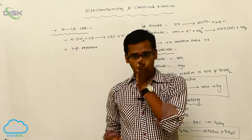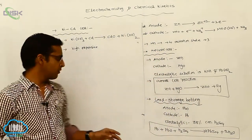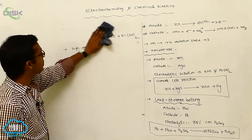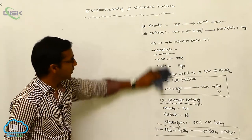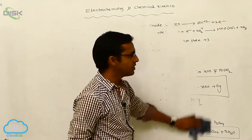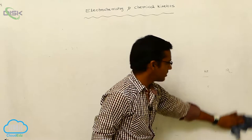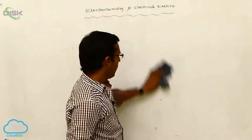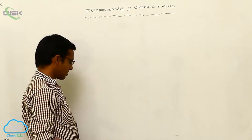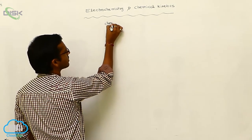The only difference between primary and secondary batteries is that primary batteries cannot be used after their period of use, but secondary batteries can be used again because they involve a charging and recharging process. These are the examples of primary and secondary batteries.